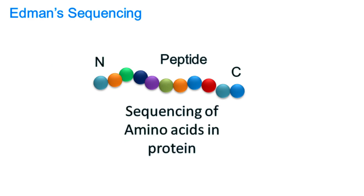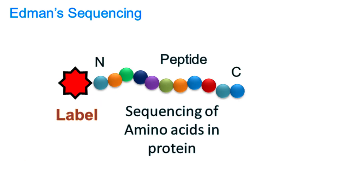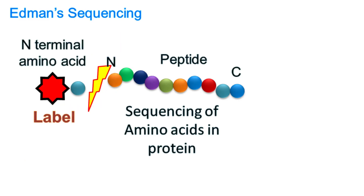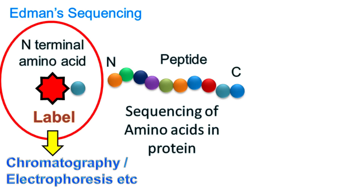In this method, the N-terminal amino acid of the peptide is first labeled and then cleaved from the peptide. The labeled amino acid is then identified by several techniques like chromatography or electrophoresis.